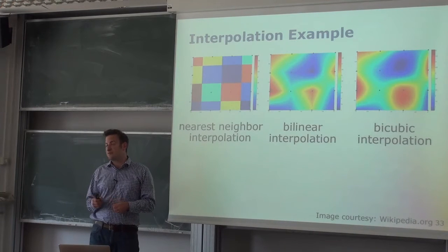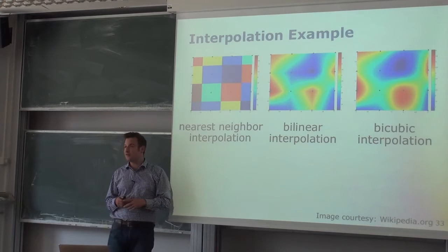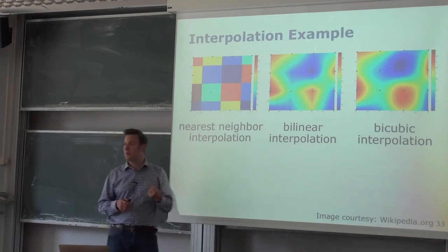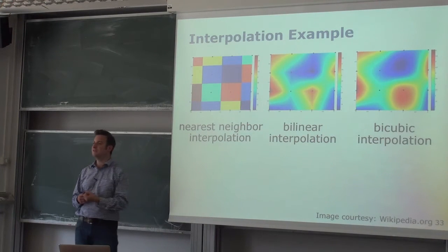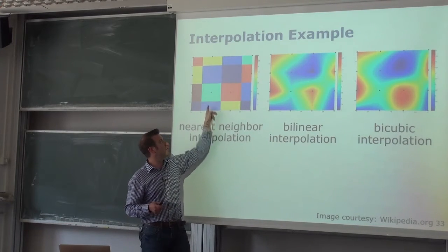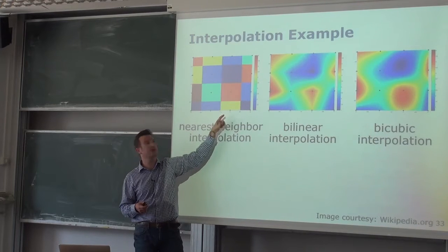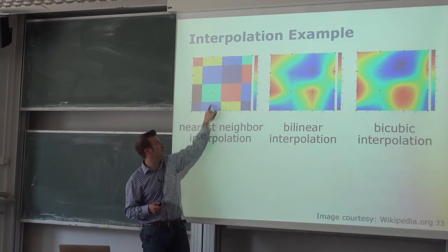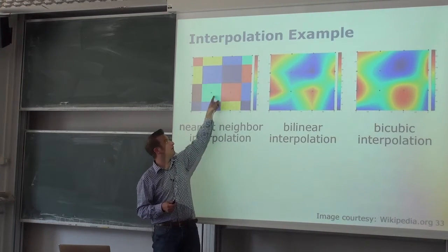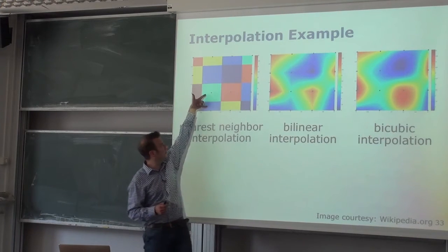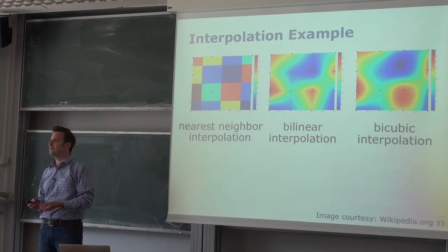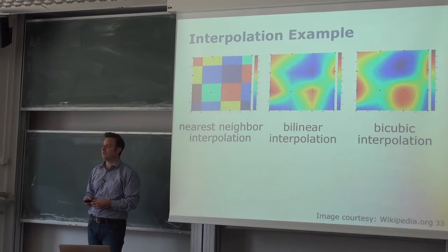We looked into three different types of interpolation techniques. The first was nearest neighbor interpolation, the second was bilinear interpolation, and the third was bicubic interpolation. The idea is that we have known intensity values on a grid-like structure. For example, we know this point is yellow, this one is blue, this one is cyan, this one is red. The question is: what is the color of all the pixels in between on this regular grid structure with known color values?